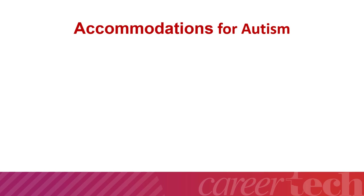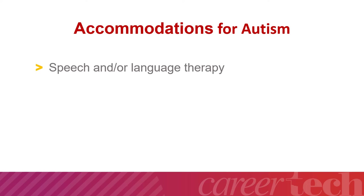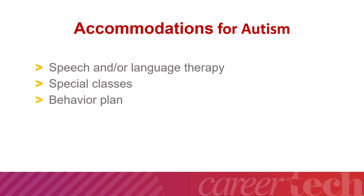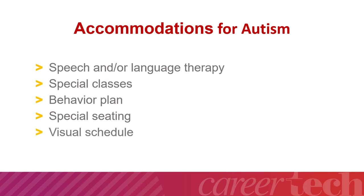Some common accommodations for students with autism include speech and/or language therapy to help with communication and social skills. Some students require special classes to work on social cues, including role play to learn appropriate social behavior. A behavior plan developed by the IEP team could help with inappropriate behaviors and meltdowns. Students with autism often work better with special seating in an area with few distractions and away from extra sensory stimuli. A visual schedule is usually very helpful, but keep in mind that last-minute changes are very difficult for most students with autism — you must prepare them for scheduled changes such as assemblies. Also make sure the IEP team has developed a plan to keep them safe from sensory triggers, such as alarm sounds that may cause a meltdown.